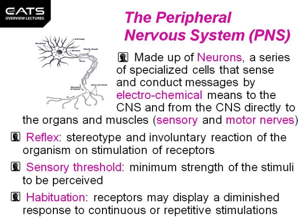Habituation is a process where receptors may display a diminished response to continuous or repetitive stimulations. Typically, the stimulations need to be non-harmful. For example, the ticking of a clock in a room, or putting on a new shirt and tie which is a bit tight or slightly uncomfortable around the neck to start with. Over a period of time, you don't hear the ticking of the clock and the tie and shirt seem comfortable around your neck.